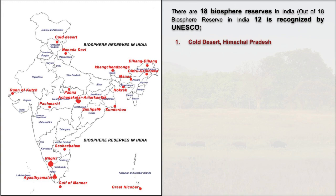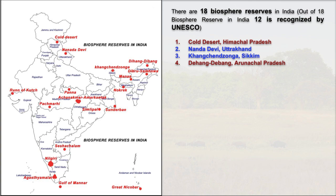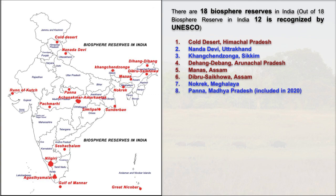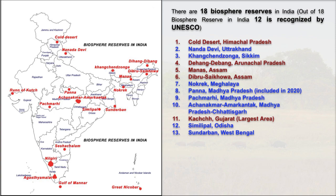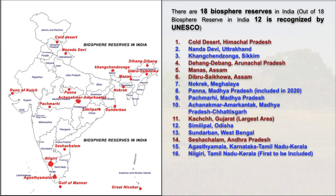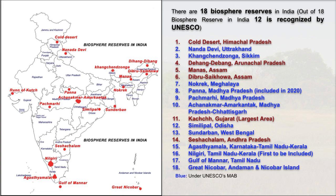The biosphere reserves recognized under UNESCO's MAB program are: Cold Desert in Himachal Pradesh, Nanda Devi in Uttarakhand, Pachmarhi in Madhya Pradesh, Achanakmar-Amarkantak shared between Madhya Pradesh and Chhattisgarh, Kachchh in Gujarat — which is the largest in terms of area — Simlipal in Odisha, Sundarbans in West Bengal, Seshachalam in Andhra Pradesh, Agasthyamalai covering Karnataka, Tamil Nadu and Kerala, Nilgiri in Tamil Nadu and Kerala, Gulf of Mannar in Tamil Nadu, and Great Nicobar in Andaman and Nicobar Islands. Whatever you see in blue on the map — all are recognized under UNESCO's MAB program.